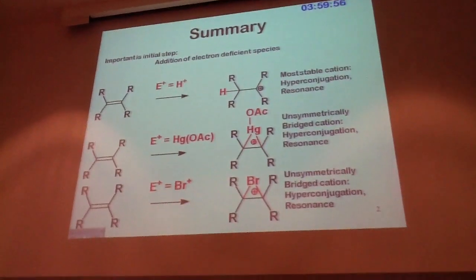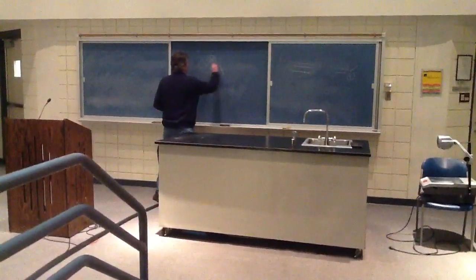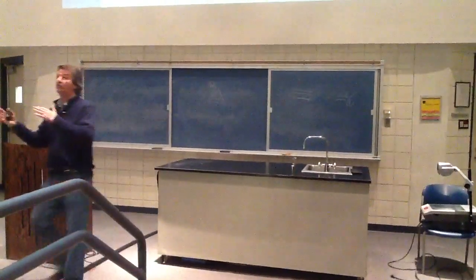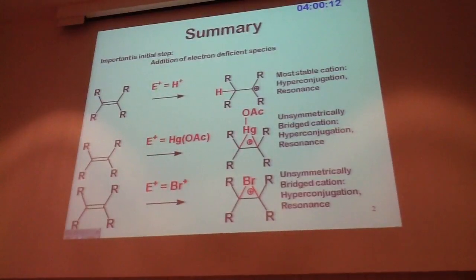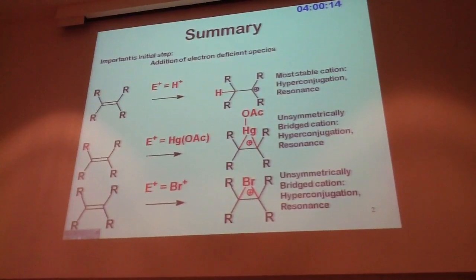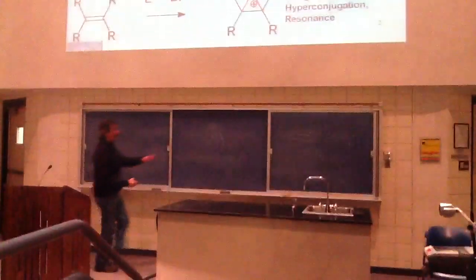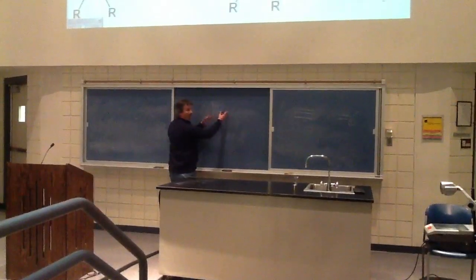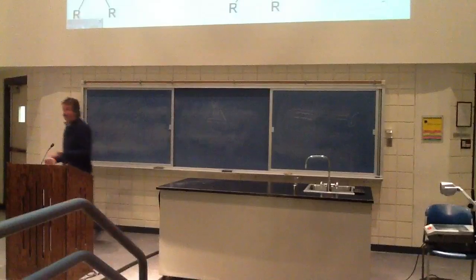For an alkyne, very much the same. And as much as you talk there about stability of carbocations, that also would be true for the alkynes, these intermediates that you have there. So in other words, if you have a difference in substitution pattern, you may prefer that it binds more to one carbon than another for a more stable cation.